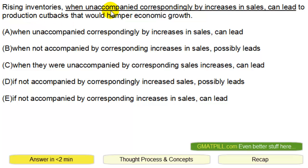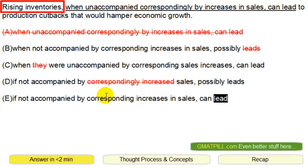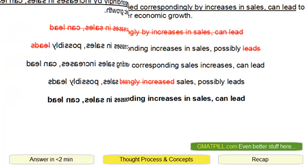A is probably not right — 'when unaccompanied correspondingly' is a little bit weird. B says 'when not accompanied by corresponding increases in sales, possibly leads' — that plural thing 'leads' is wrong. C uses 'they,' which is unnecessary. D has 'if not accompanied by correspondingly increased sales' with weird phrasing. E says 'rising inventories can lead' with 'corresponding increases' — that's correct, so E is the answer.